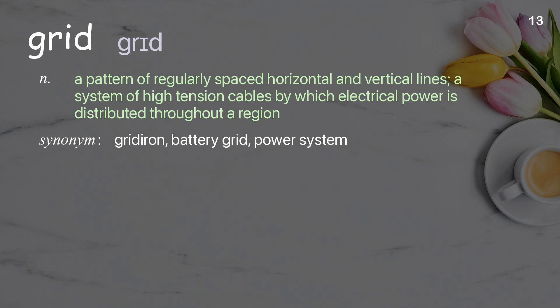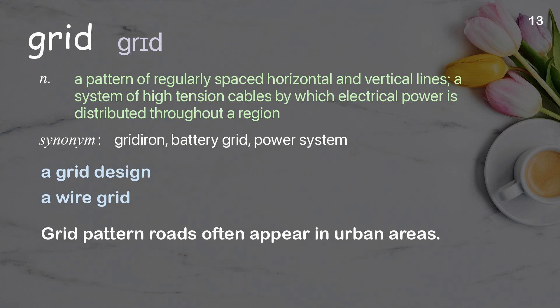Grid: A pattern of regularly spaced horizontal and vertical lines; a system of high-tension cables by which electrical power is distributed throughout a region. Examples: A grid design. A wire grid. Grid pattern roads often appear in urban areas.